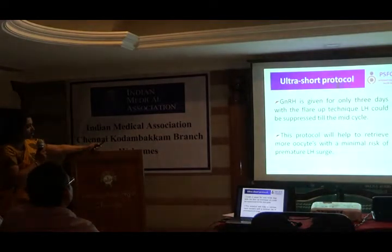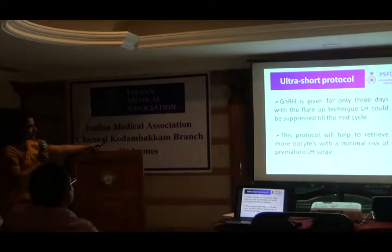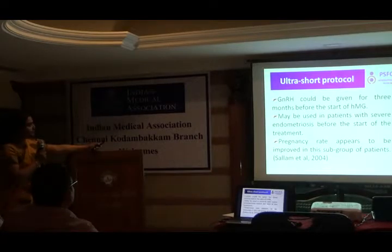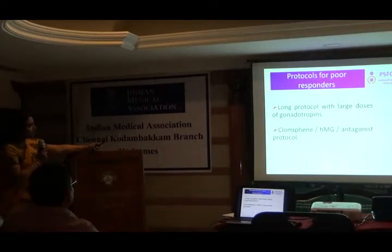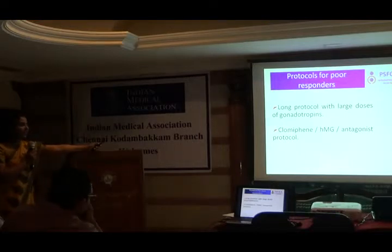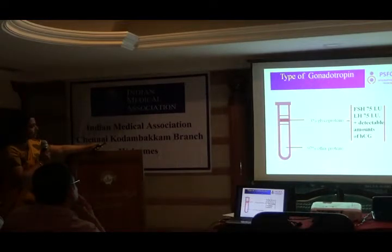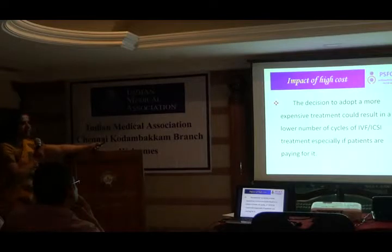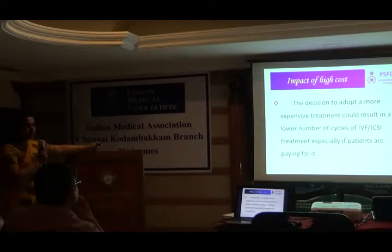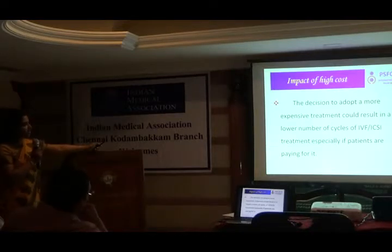The ultra-short protocol is only three days of stimulation, increasing the amplitude of the GnRH gonadal axis and increasing follicle development. When we have a poor responder — you give large doses but she still doesn't respond — we can use clomiphene, HMG and an antagonist protocol. Generally, gonadotropins are easy to use. The only thing we need to do is modify the gonadal axis. But it is an expensive treatment because these are all exogenous gonadotropins.